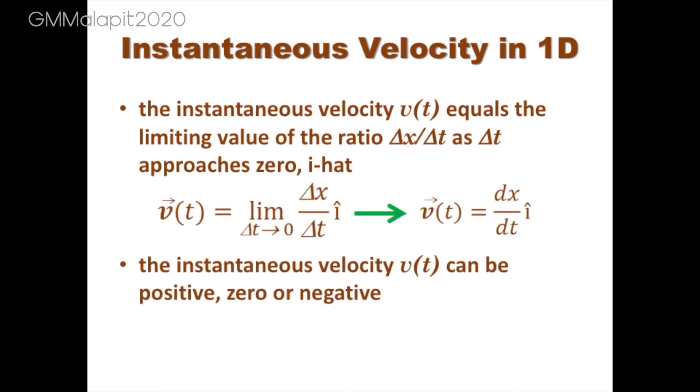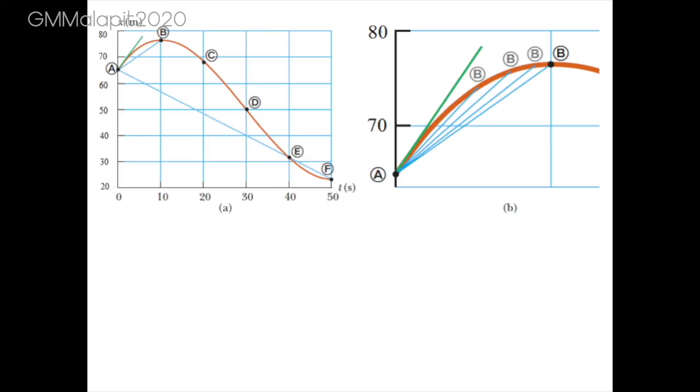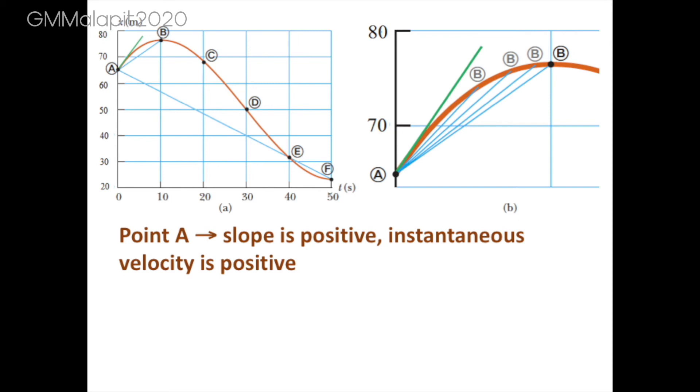The instantaneous velocity V(t) can be positive, zero, or negative. If we go back to Figure A, we can observe that in the first 10 seconds, the slope of the position-time graph is positive, giving us an instantaneous velocity which is positive, since the car is moving in the larger values of x.